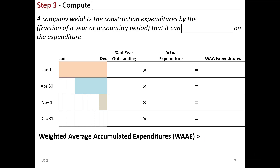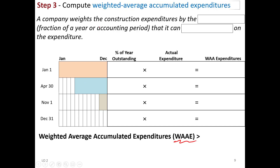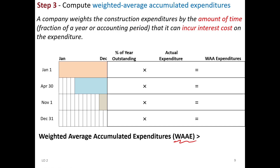One of the tricky parts about determining interest capitalization is calculating the weighted average accumulated expenditure, or WAAE — I call it YE. The company is making payments sporadically throughout the year, so we compute a weighted average of these expenditures by weighting each payment by the fraction of the year that it was outstanding. The first payment was $100,000 on January 1st, outstanding for 12 out of 12 months — so the full $100,000 counts.